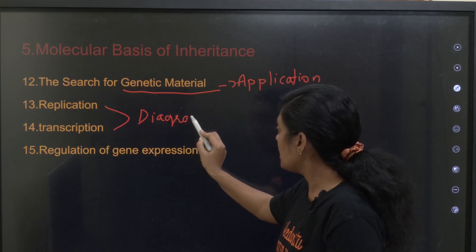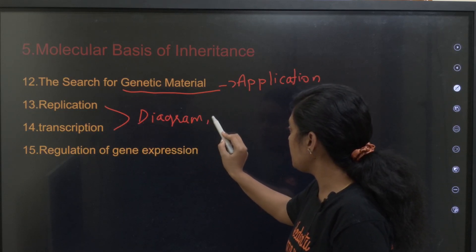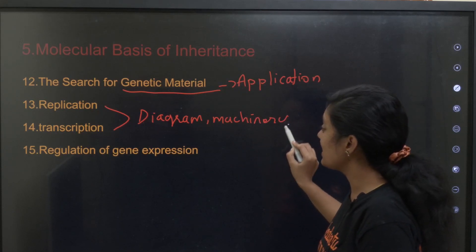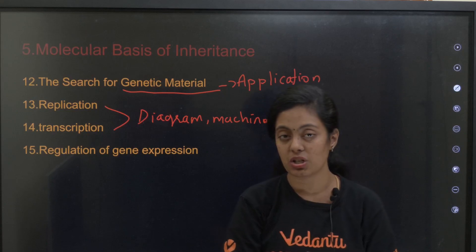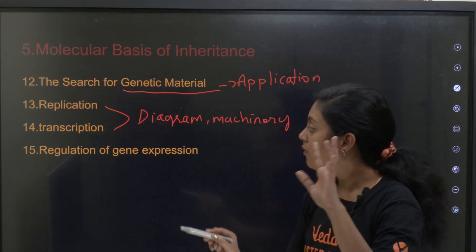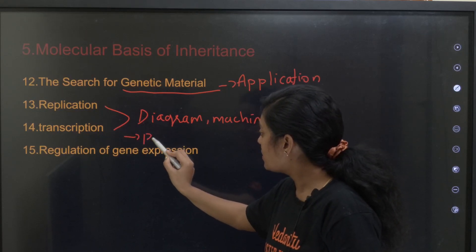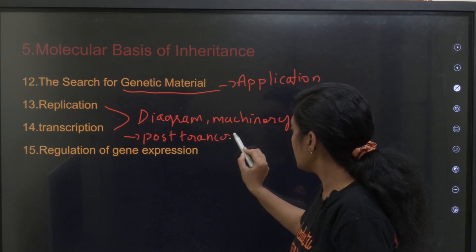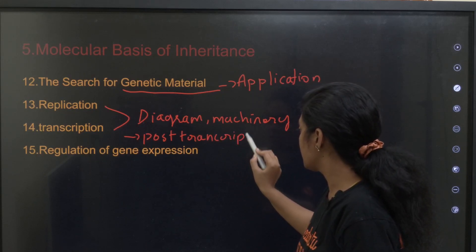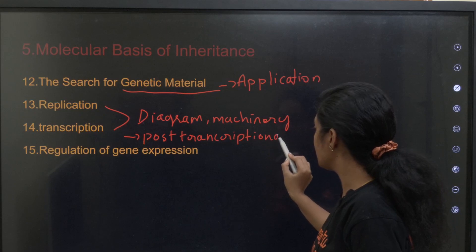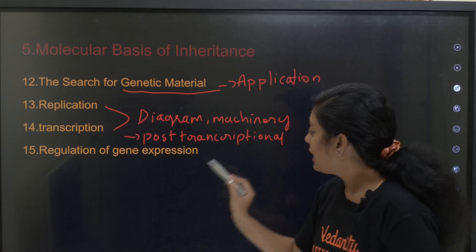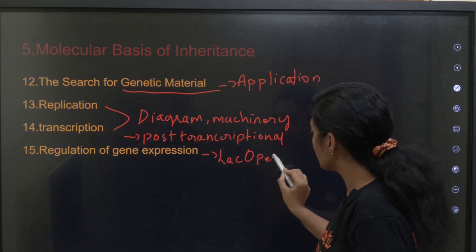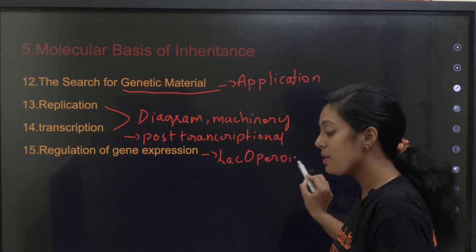Learn the diagrams and machinery for replication and transcription. 'Machinery' refers to the enzymes used in these processes. For transcription, pay special attention to post-transcriptional modifications — in eukaryotes: polyadenylation and splicing. For regulation of gene expression, the lac operon is a very very important concept.